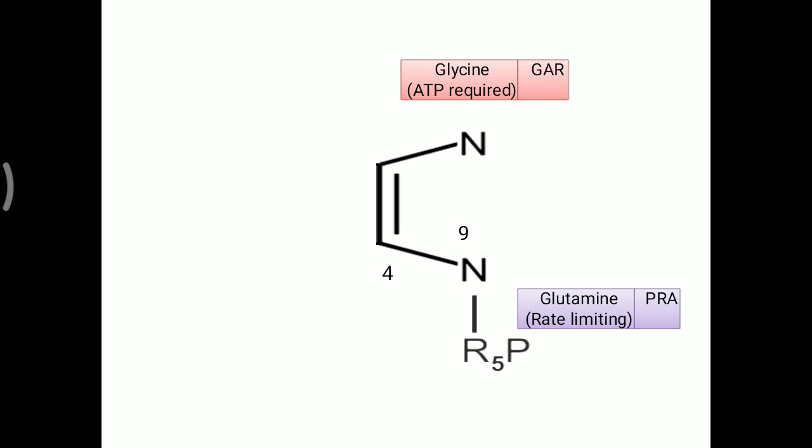Next, the 4th and 5th carbon and 7th nitrogen are added from glycine amino acid. Here ATP is needed — so 2 plus 1, making 3 ATP utilized up to here. The molecule formed is called GAR (glycinamide ribonucleotide).